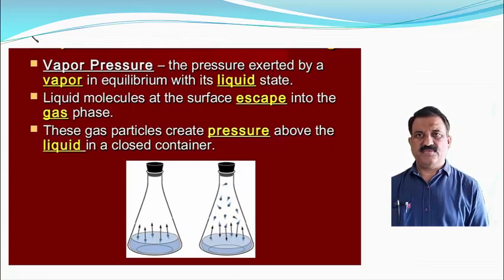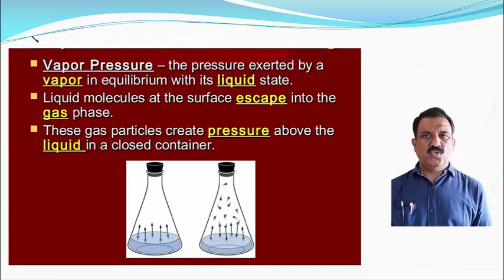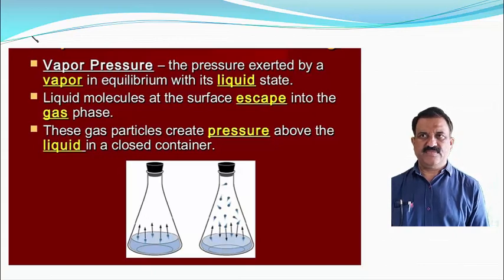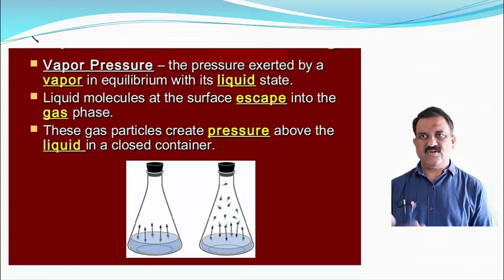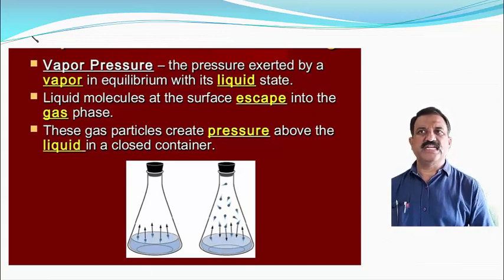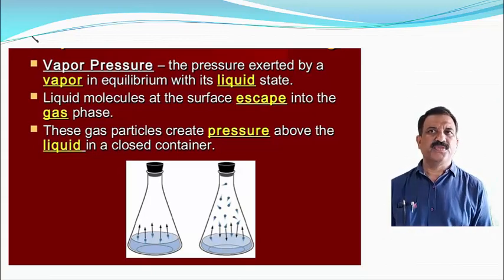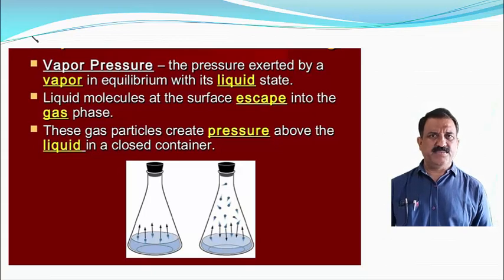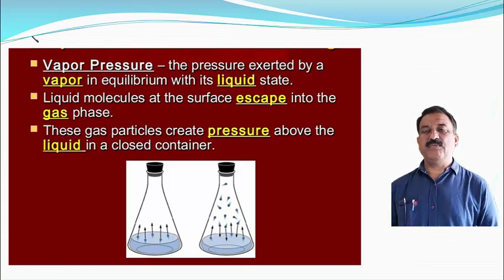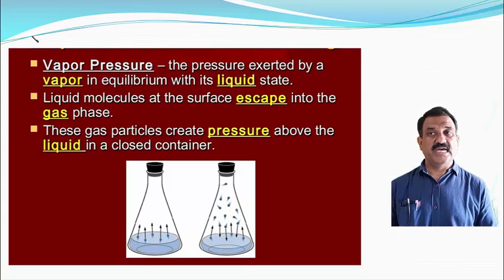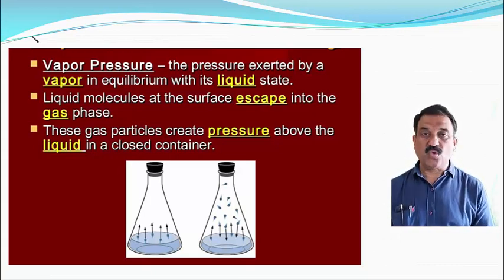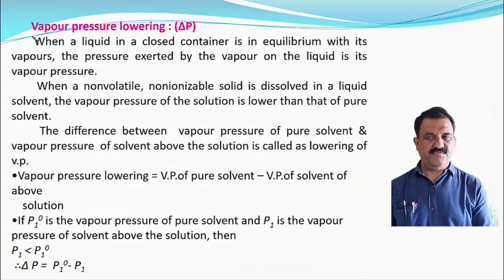To summarize with an example: two vessels contain the same liquid — one is an open vessel and the other is a closed vessel. Evaporation and condensation take place simultaneously, and at equilibrium, the pressure exerted by vapour in equilibrium with its liquid state is known as vapour pressure. The liquid molecules at the surface escape into the gas phase, and these gas particles create a pressure above the liquid in a closed container, which is called vapour pressure.